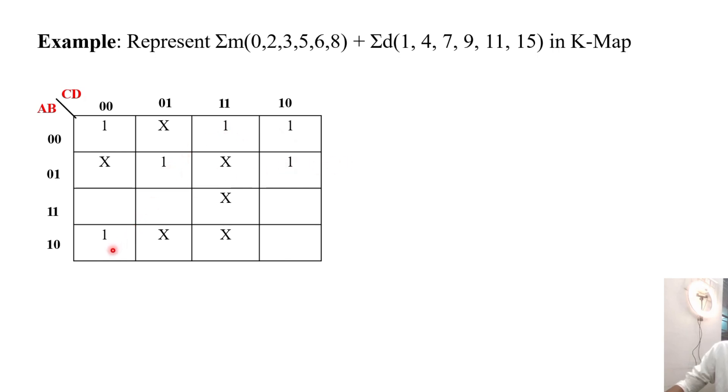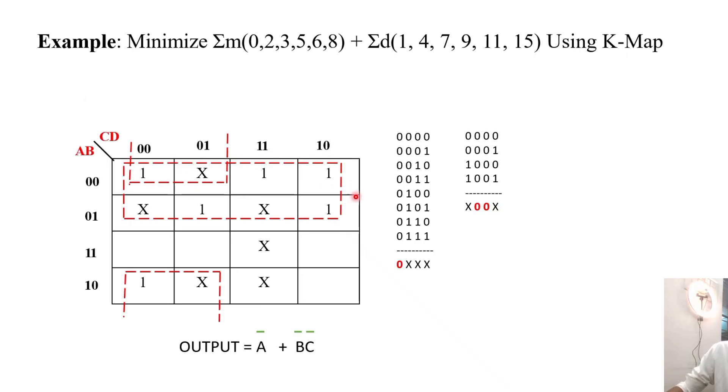Then for don't care, we place them at 1, 4, 7, 9, 11, 15. Here we have to group these values.